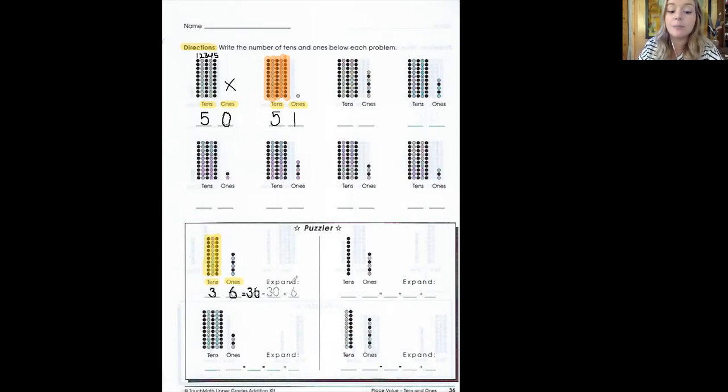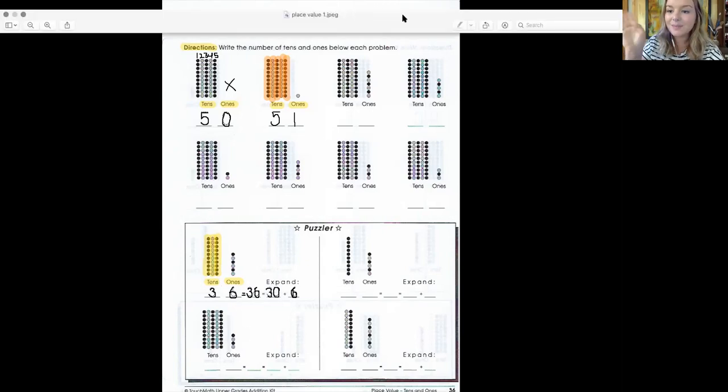Now if we're going to expand that, that means that we're going to break it down in tens and ones again. So that equals 30 because three tens is 30, 30 plus six because we have six ones. This is a little harder. You might need to ask mom and dad for help or you can watch the video again. All right, friends. Bye.